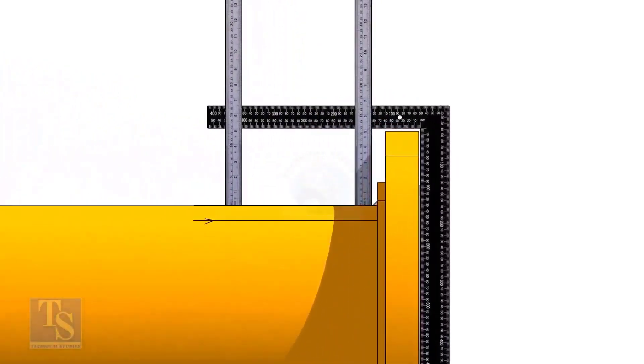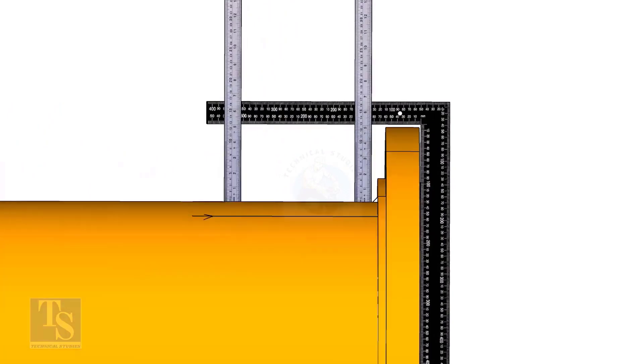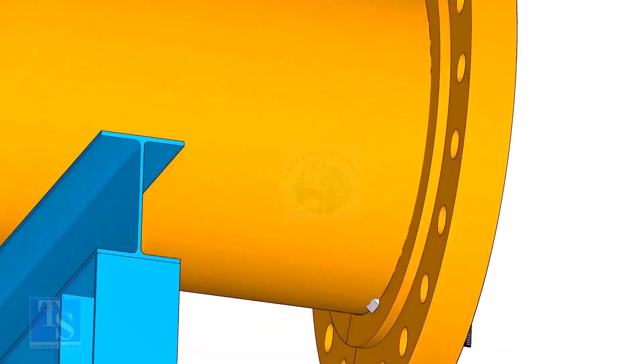Tack weld on the top of the pipe with the flange and check the squareness. If correct, tack weld at the bottom side also.